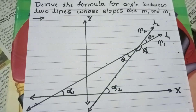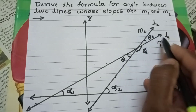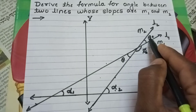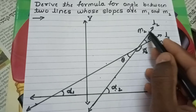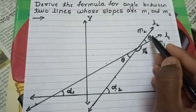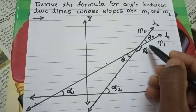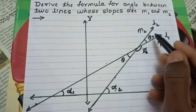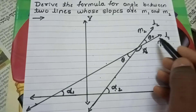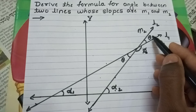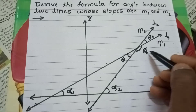The angle between these two lines is theta and also pi. From the diagram, theta is the acute angle and pi is the obtuse angle between the two lines.